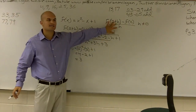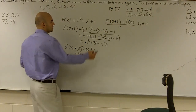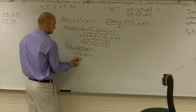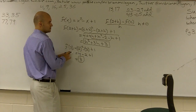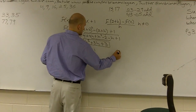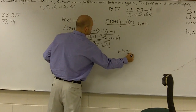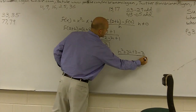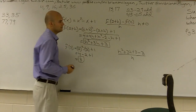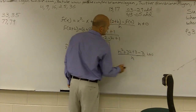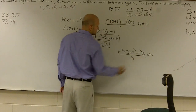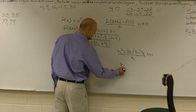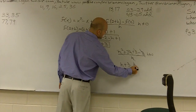Now let's go ahead and put it back into the formula. So I have f of 2 plus h minus f of 2, all divided by h. I'm going to write h squared plus 3h plus 3, minus 3, all over h, where h cannot equal 0. The 3's cancel out, and I can factor out an h. So therefore I'm left with h plus 3, where h cannot equal 0.